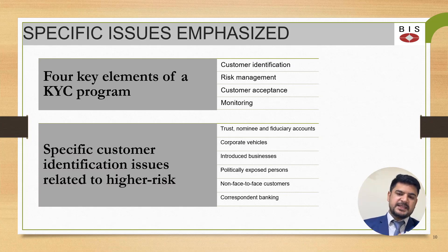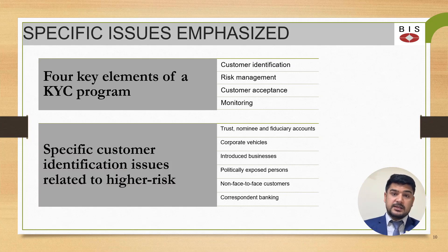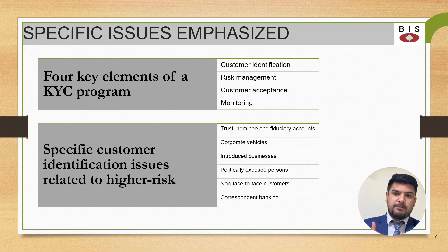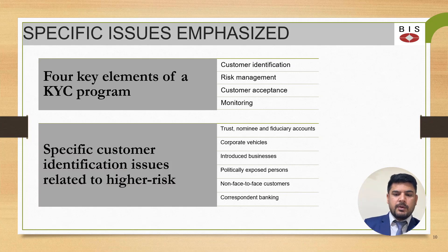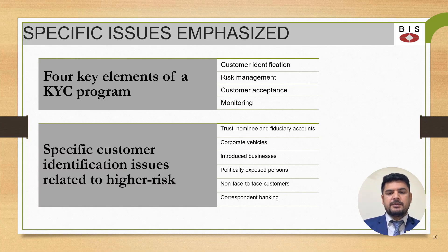The third key element is customer acceptance. On the basis of the risk assessment, you decide whether to accept or reject the customer, with a sound and strong background justifying your decision. The fourth is ongoing monitoring — you monitor customers and their transactions over time. The paper also covers specific customer identification issues related to high-risk customers.